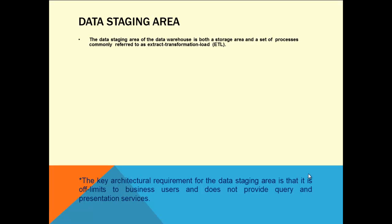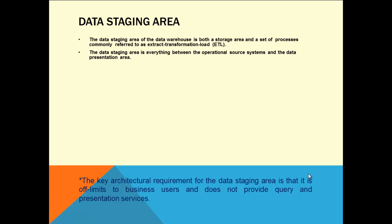The data staging area of a data warehouse is both a storage area and a setup process, commonly referred to as extract, transformation and load. This is the storage area for a data warehouse — you first stage the data before loading it into the warehouse. The data staging area is everything between the operational system and the data presentation area.